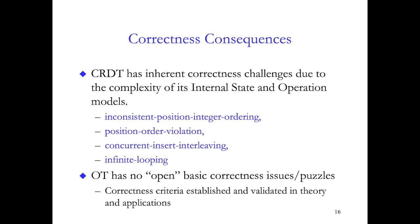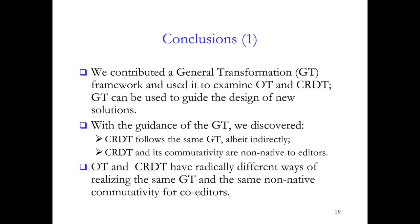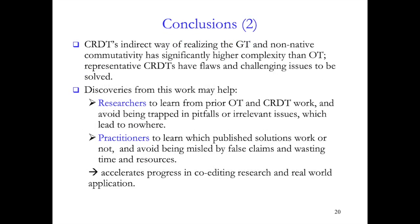On the other hand, OT has a well-established set of correctness criteria that is well-understood and validated. It has no open correctness issues, as far as we know. To summarize this work, we contributed a generic transformation framework that fully captures the requirements for consistency maintenance in co-editors. We used it as a lens to critically examine OT and CRDT solutions, and it allowed us to clearly articulate the similarities and differences. Both techniques follow the same general transformation, but OT achieves commutativity directly whereas CRDT is indirect. The content-centric nature of CRDT has given rise to numerous open problems yet to be fully addressed. Finally, our framework is based on an end-to-end description for co-editing, and we think it will provide a common ground for researchers and practitioners to compare and contrast solutions, hopefully accelerating innovations in this space.